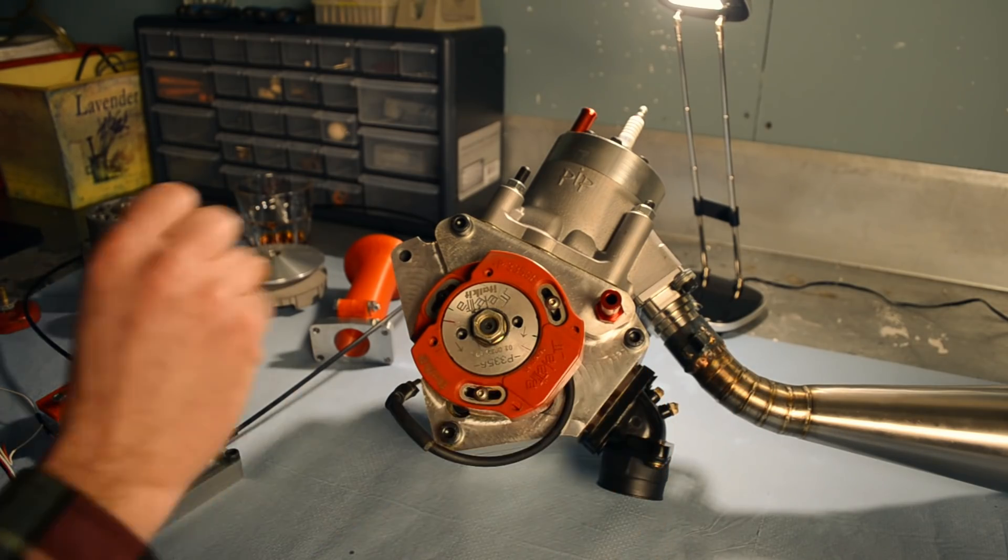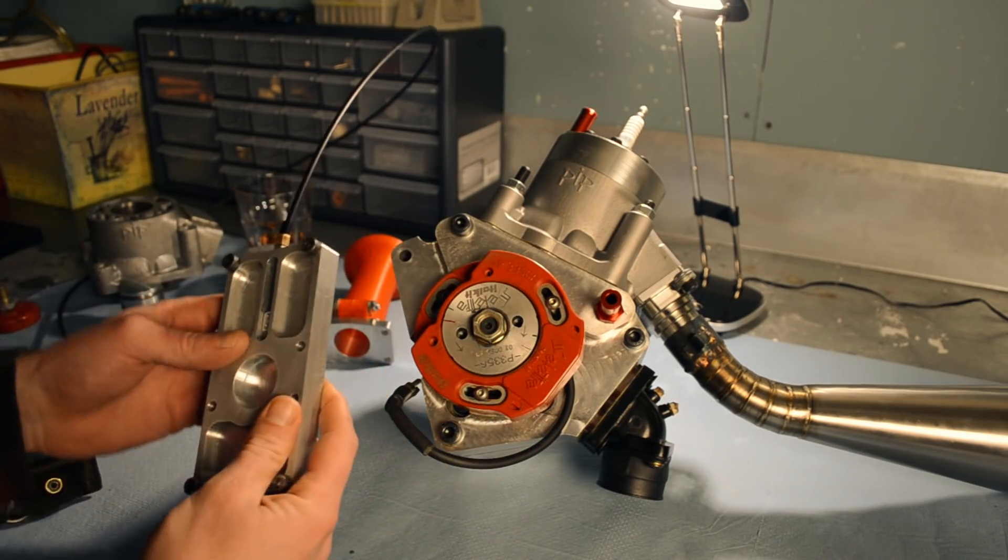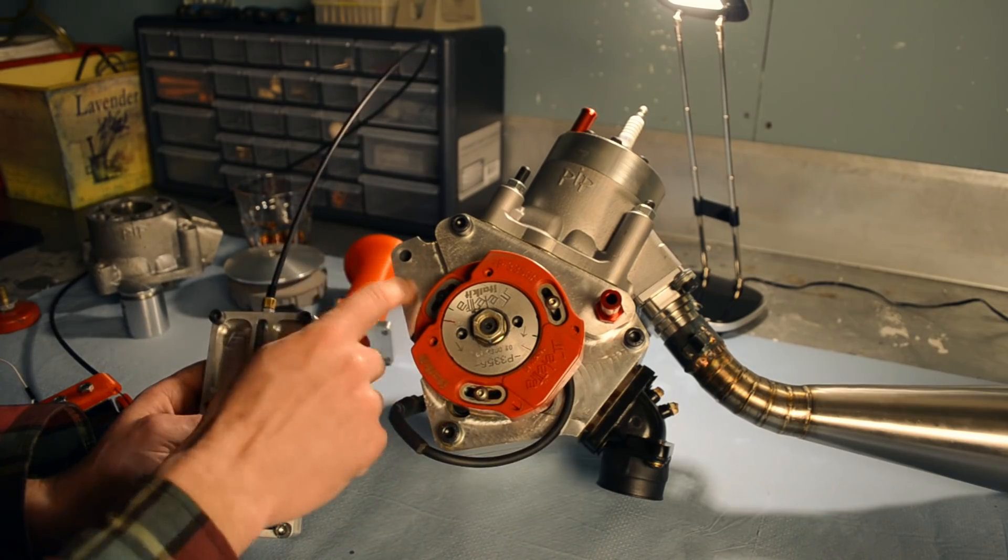At RPM, this takes over. So this is the secondary intake. And this is the reed valve. On this side there's no valve.